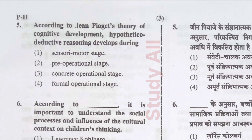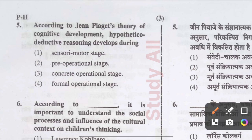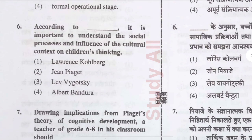Question number five: According to Piaget's theory of cognitive development, hypothetical deductive reasoning develops during — the correct option is option four, the formal operational stage, because a child can think hypothetically at that upper stage.